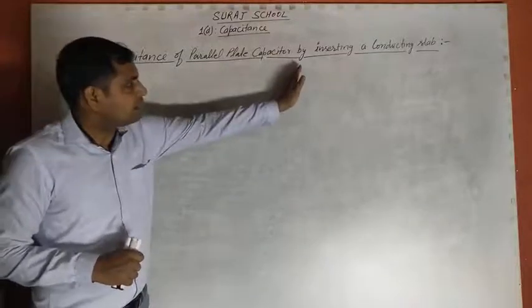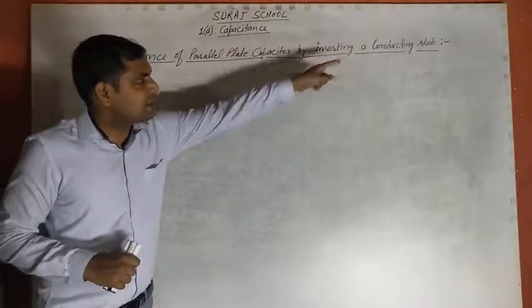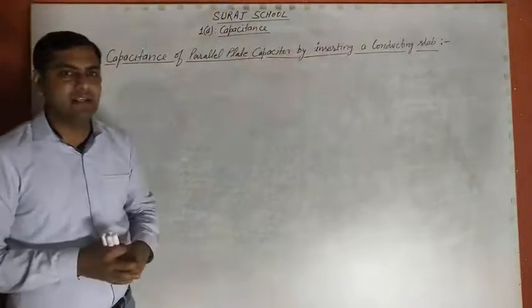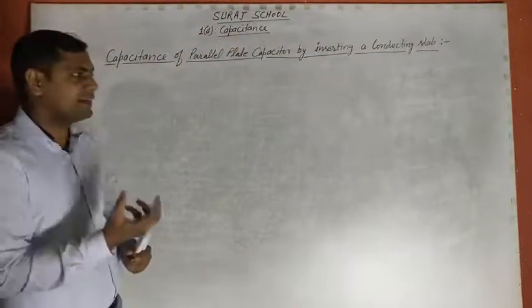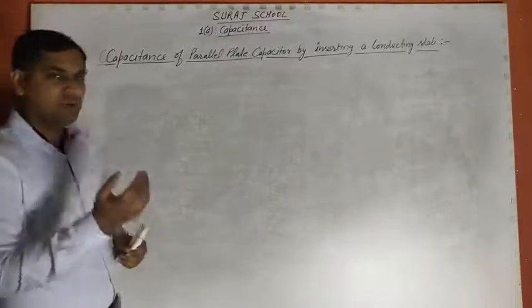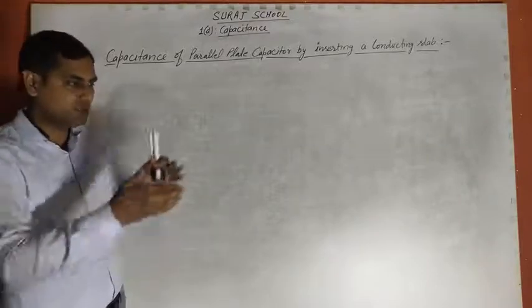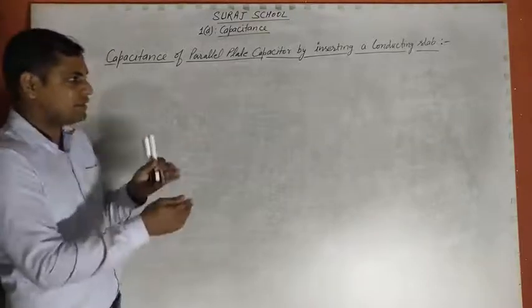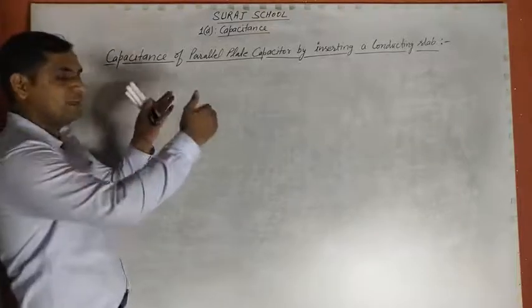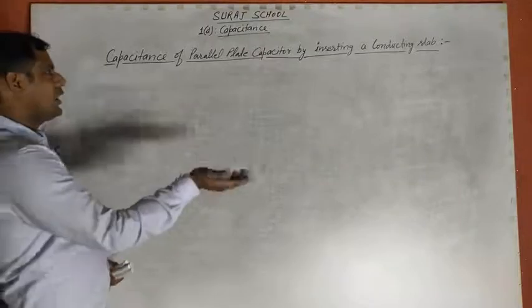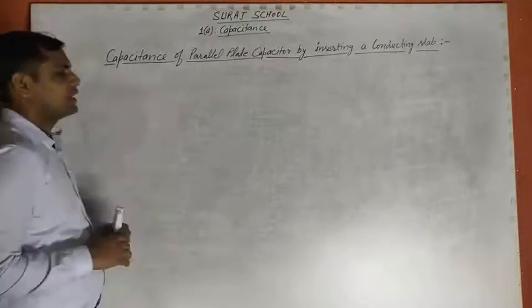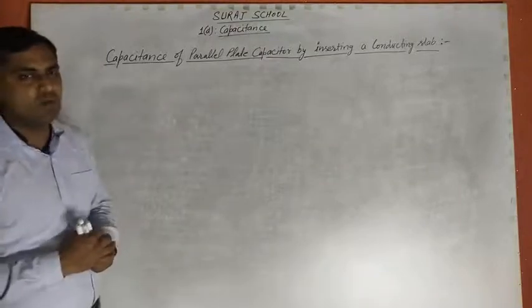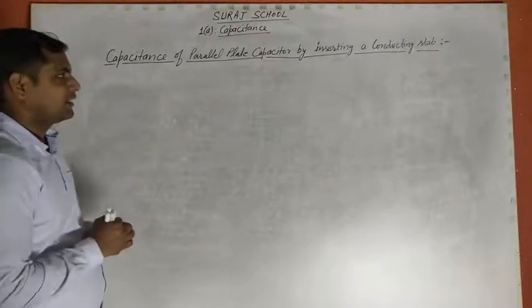Today, we are inserting a conducting slab — it is a conductor, a piece of metal — inserted between both plates. So, what is the Capacitance of the Parallel Plate Capacitor in this case? We will calculate it.